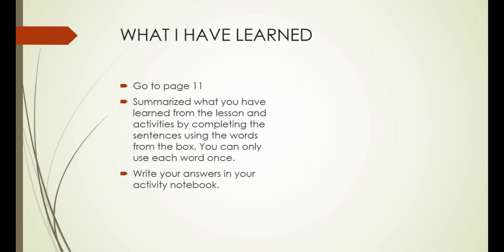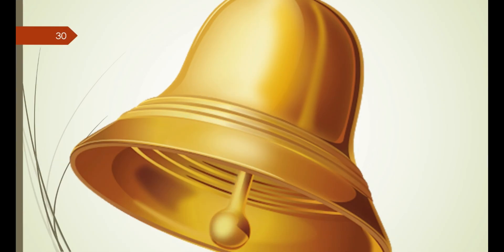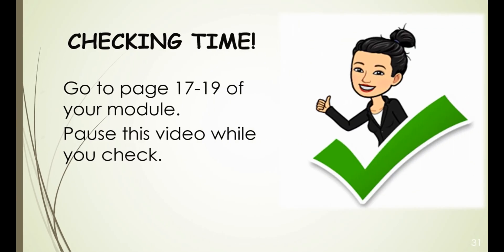Did you learn something? Go to page 11 and summarize what you've learned from the lesson and activities by completing the sentences using the words from the box. You can only use each word once. Write your answers in your activity notebook. Are you ready? Let's go! Were you able to answer all items in "What I've Learned"? Great, let's see how you did. Go to pages 17 to 19 of your module and pause this video while you check your work. Did you get a perfect score? Awesome! Almost perfect? That's alright — let's do better next time.